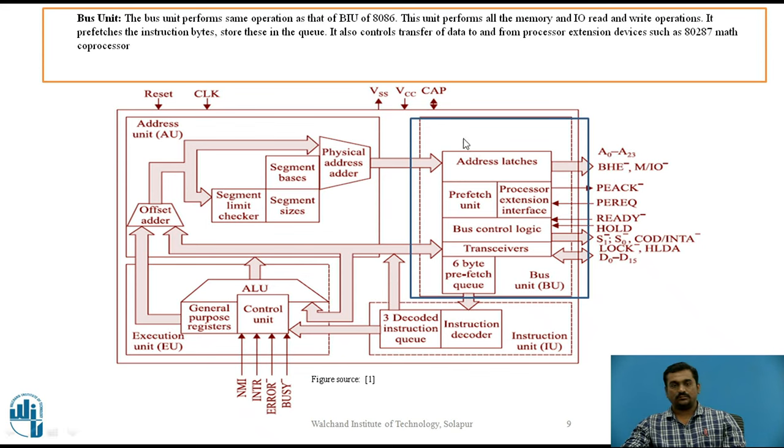As you can see here, this block contains address latches which latches this 20 or 24-bit physical address onto this address latches. It also generates some control signals such as bus high-enable, memory or IO read operation. It has got 24 address lines A0 to A23. This prefetch unit works for the purpose of storing the instructions into this 6-byte prefetch queue beforehand.